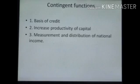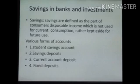Contingent functions are: basis of credit, increased productivity of capital, and measurement and distribution of national income. Next we see savings in banks and investment. Savings are defined as the part of a consumer's disposable income which is not used for current consumption, rather kept aside for future use.